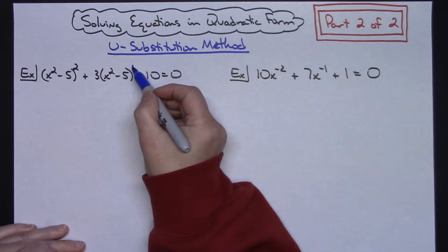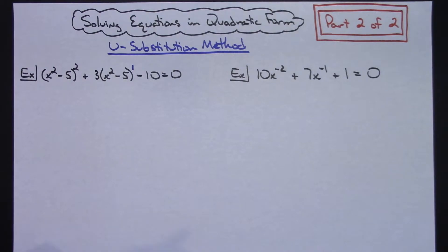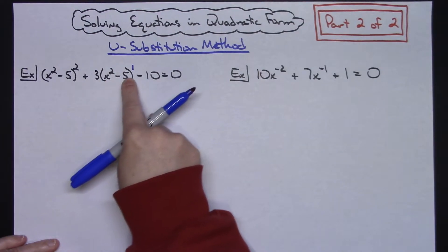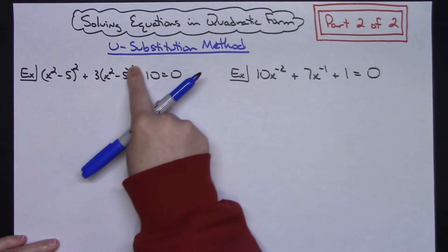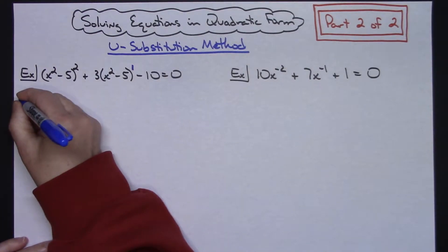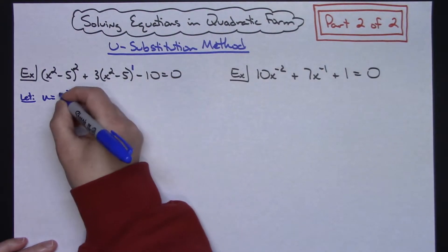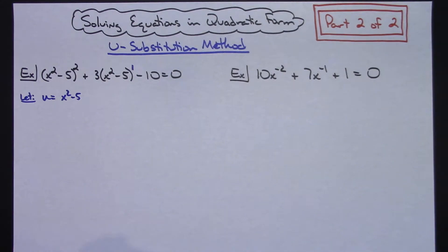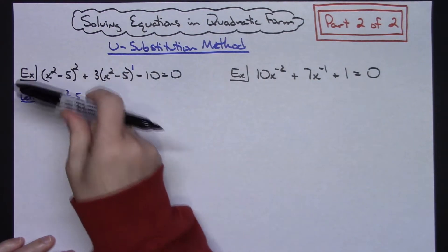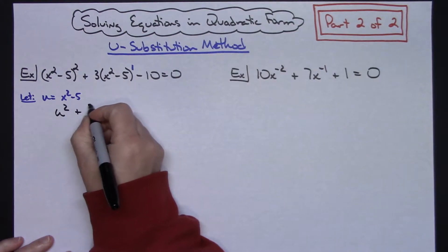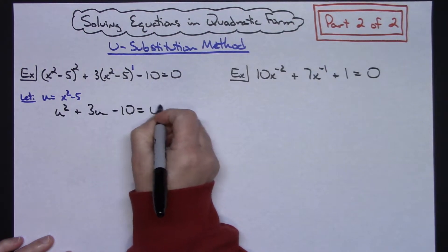So it does qualify - this exponent is half of that exponent. We are still going to use a u-substitution method. I'm going to take this middle term and that's what I let u equal. I'm going to let u equal x squared minus 5. Now rewriting this equation in terms of u, I would have u squared plus 3u minus 10 equals 0.